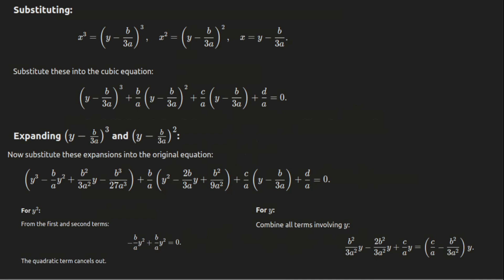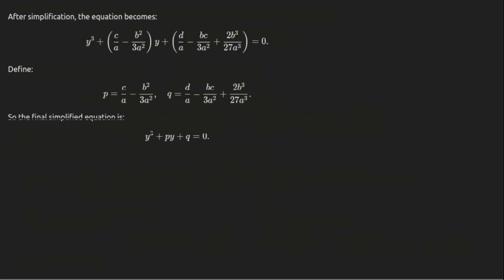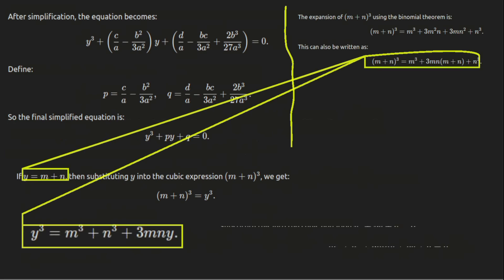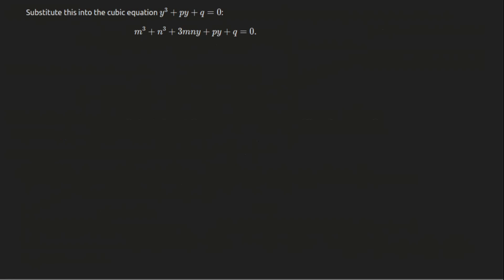Now let's recall two important relationships we derived earlier. The first is that the cube of m plus the cube of n equals negative q. In other words, when you add the cubes of m and n, the result is the negative of q. The second relationship tells us that three times the product of m and n equals negative p. So when we multiply m and n and then multiply the result by three, it gives us the negative of p.